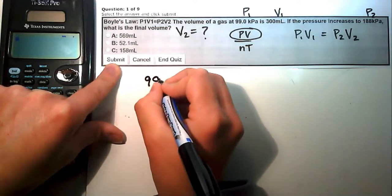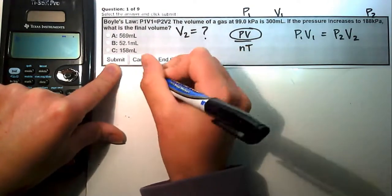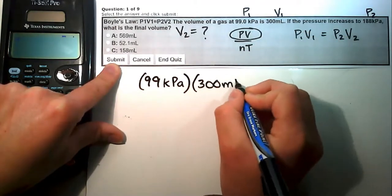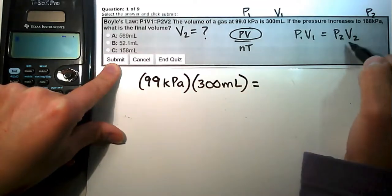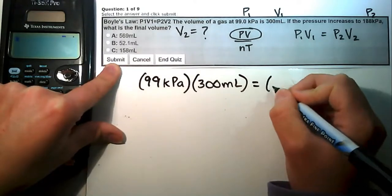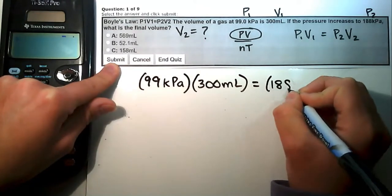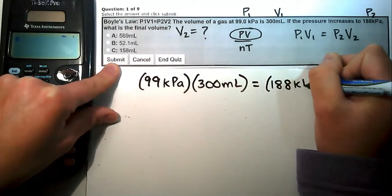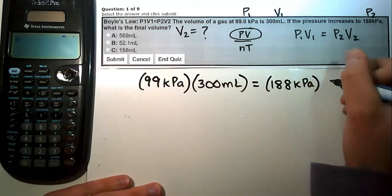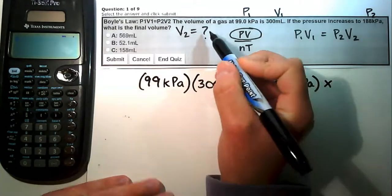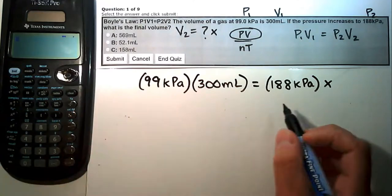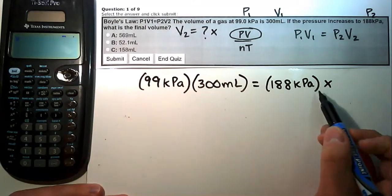Substituting in our values: P1 is 99 kilopascals times V1 is 300 milliliters equals P2 which is 188 kilopascals times V2. Our units of pressure are the same on both sides, so we're good. If they were not the same, we would need to convert one unit of pressure to match the other. V2 is our unknown, so we set it equal to X.